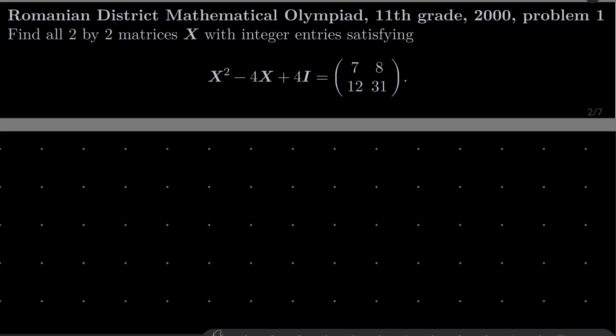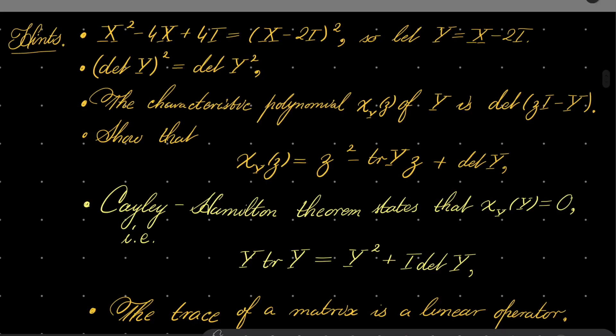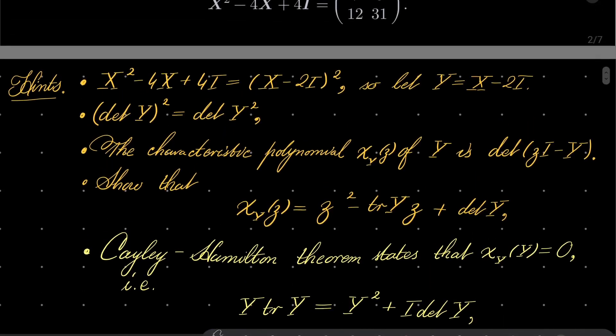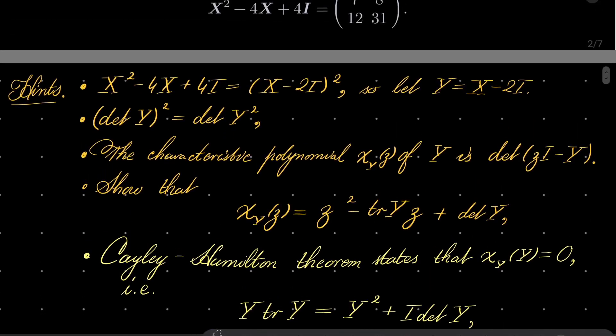It's a rather simple standard problem, but you have to know the procedure for solving such equations. Here are my hints. First, notice that X squared minus 4X plus 4I can be written as (X minus 2I) squared. So make the following substitution: put Y equal to X minus 2 times I.